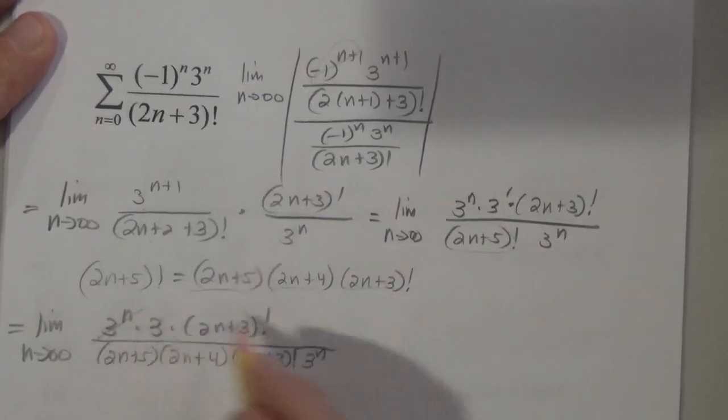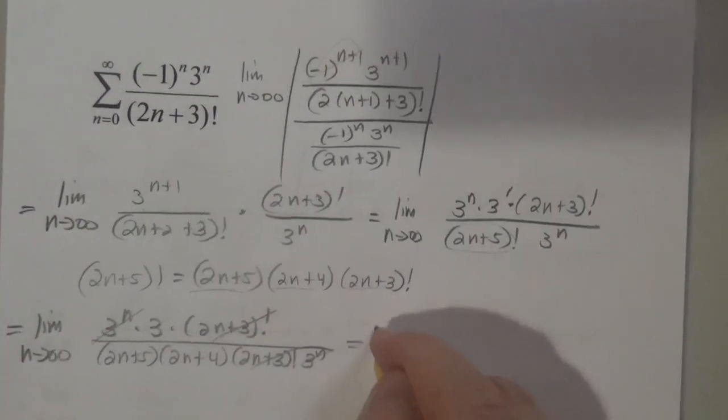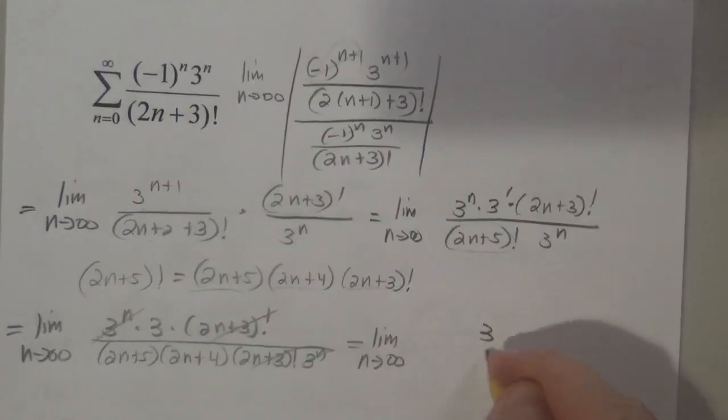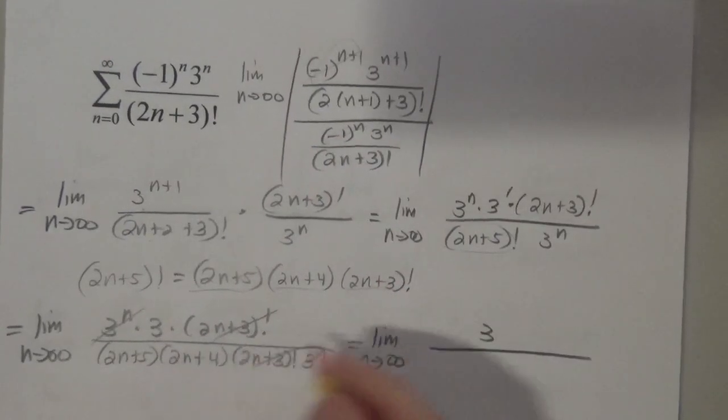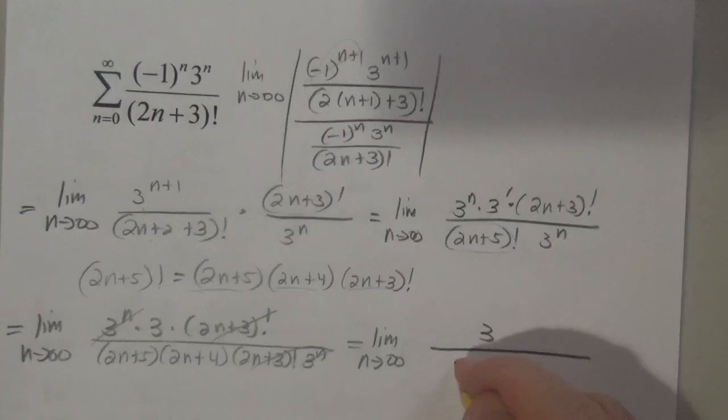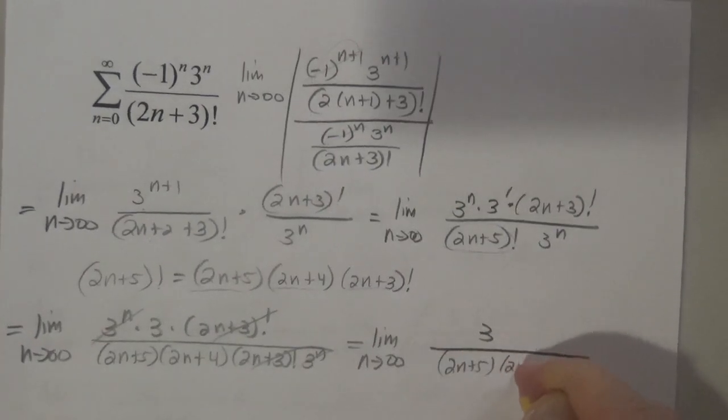Those two guys cancel, those two guys cancel. So I'm just left with the limit as n goes to infinity of 3 over (2n + 5) and (2n + 4).